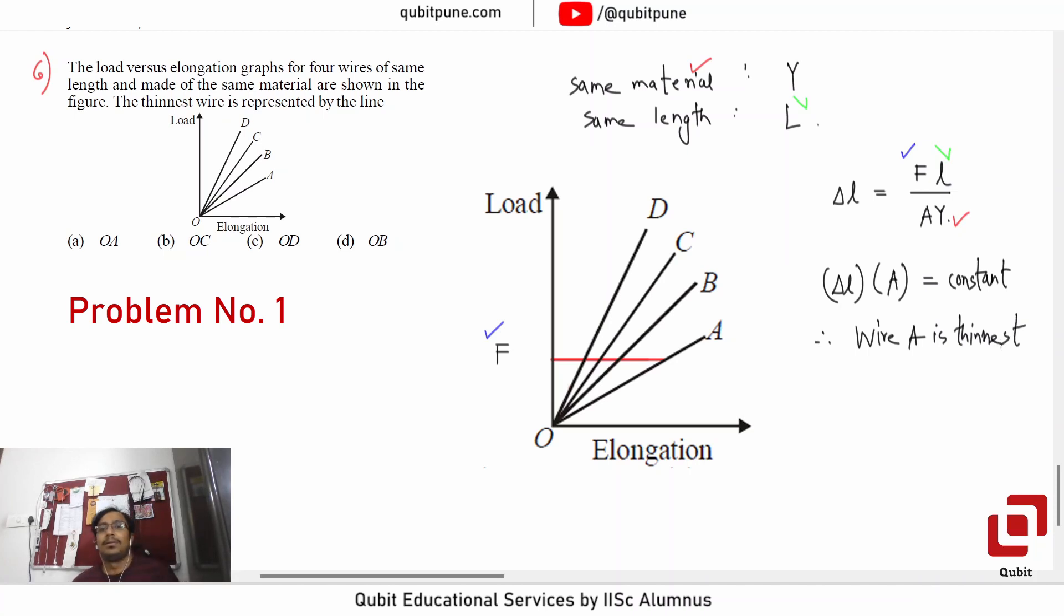Yes, we can also interpret it the other way. To produce the same elongation, we have to apply more force on wire D because it is thicker. Okay, question six.